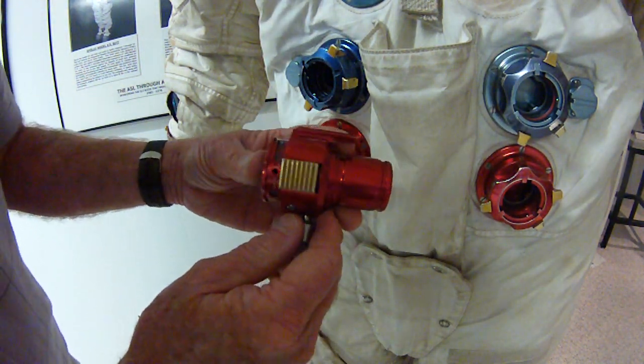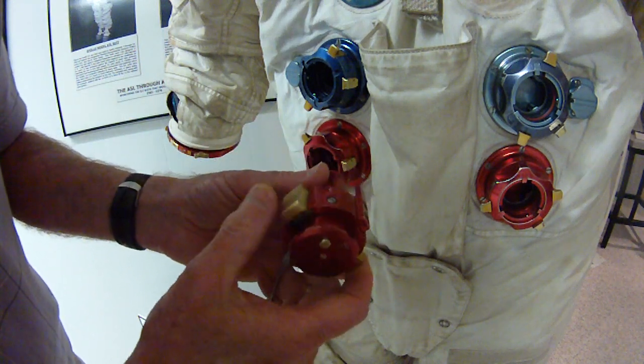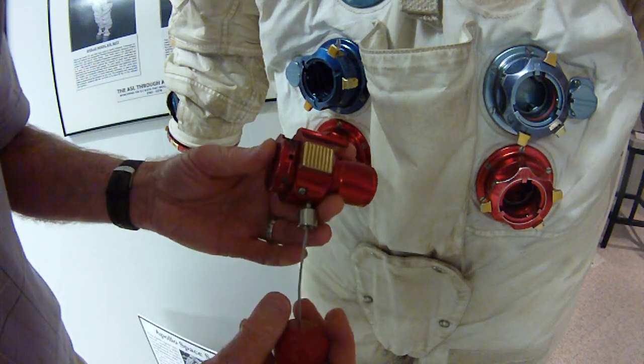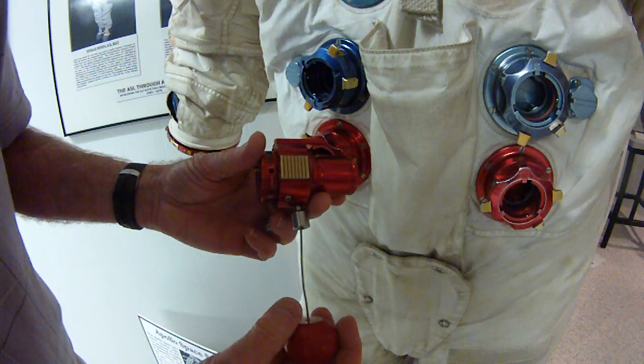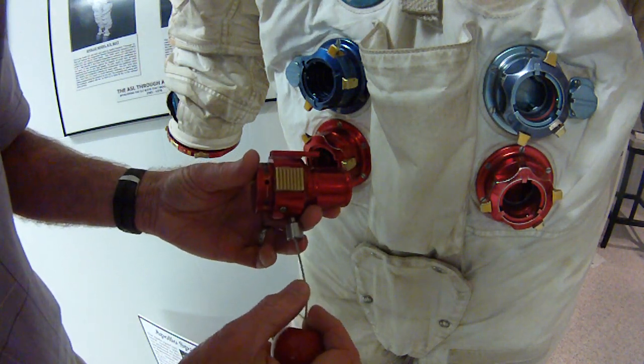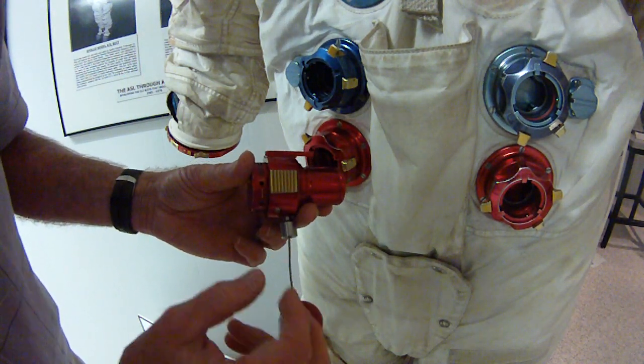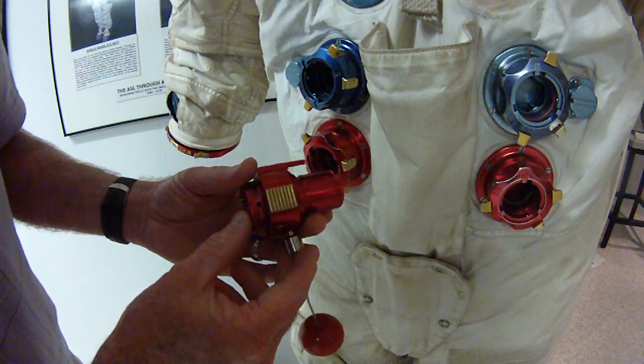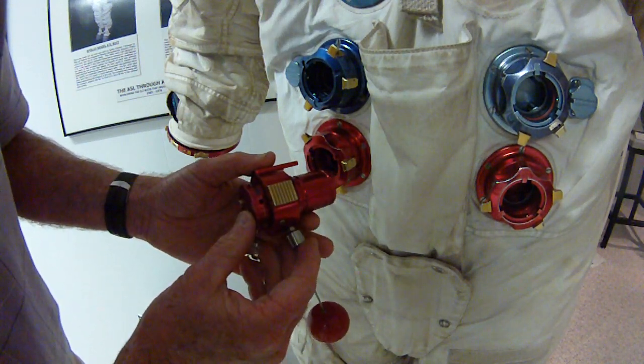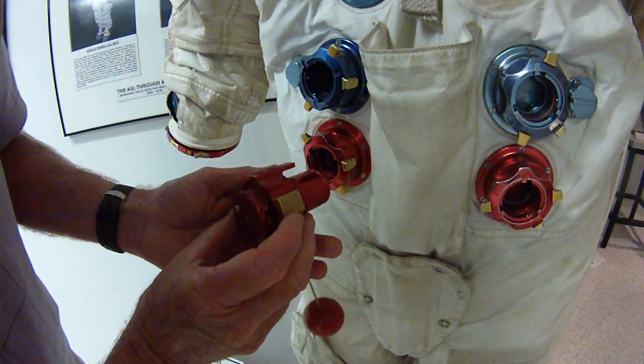This is the Apollo oxygen purge valve that was used in the Apollo suits during EVA, extra vehicular activity. It was used in case the astronaut had a tone in his headset that was an alarm indicating leakage in the suit or a low flow condition where you had to get more flow into the suit, into the helmet area.